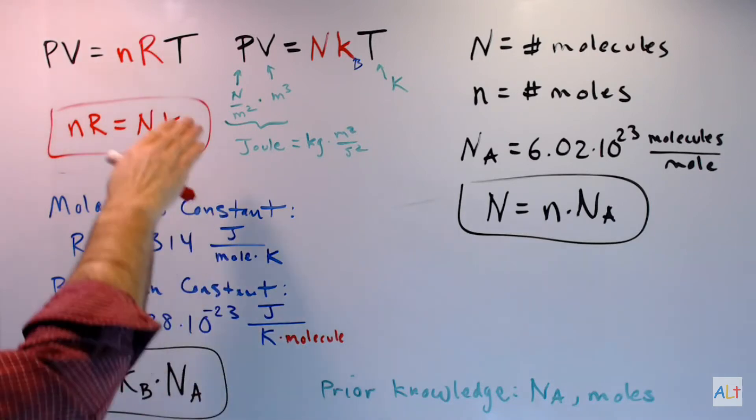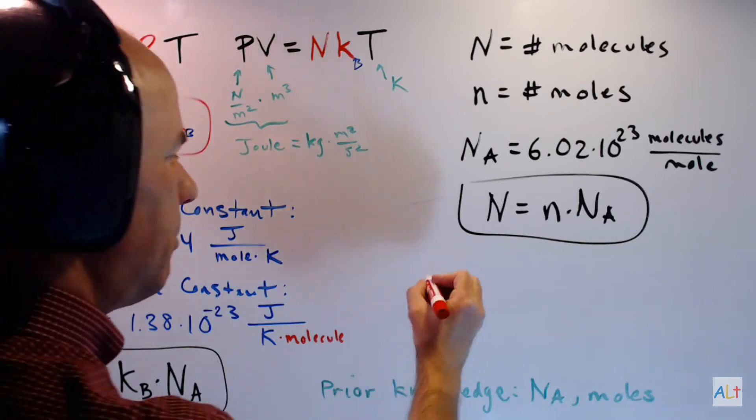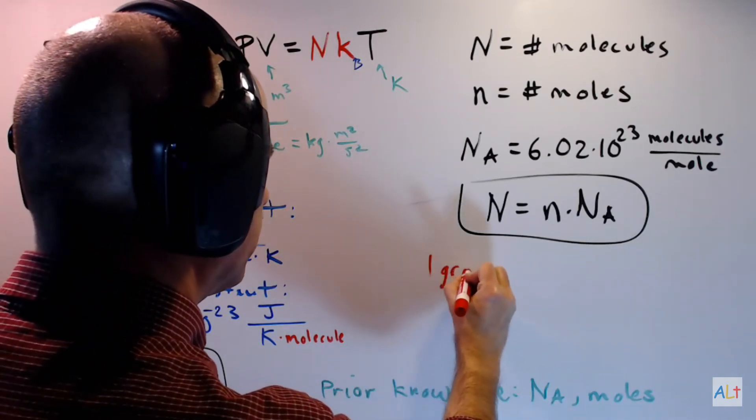Now, the reason that I prefer it this way is because when you're working with the ideal gas law, you're always talking about molecules. And even in the case of a monatomic gas, the individual atoms still count as molecules. Now, there is another issue that is even more subtle and annoying. Remember where Avogadro's number comes from.